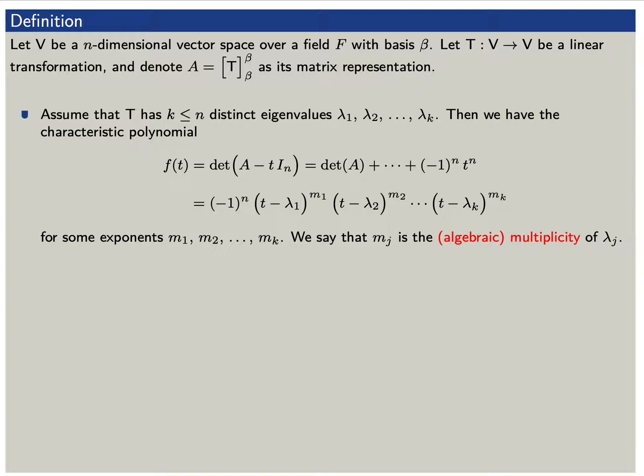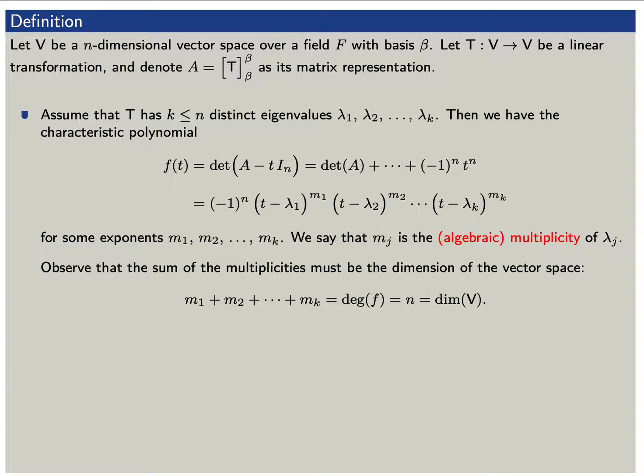Then our characteristic polynomial f of T factors as plus or minus 1 times (T minus lambda 1) to some power m1 times (T minus lambda sub k) to some power m sub k. The exponents m1, m2 through m sub k are called the multiplicities of the corresponding eigenvalues lambda 1, lambda 2 through lambda sub k. Observe that the sum of the multiplicities must equal the dimension of the vector space, since the number of factors m1 plus m2 plus m sub k must be the degree of the polynomial, which equals the dimension of V.